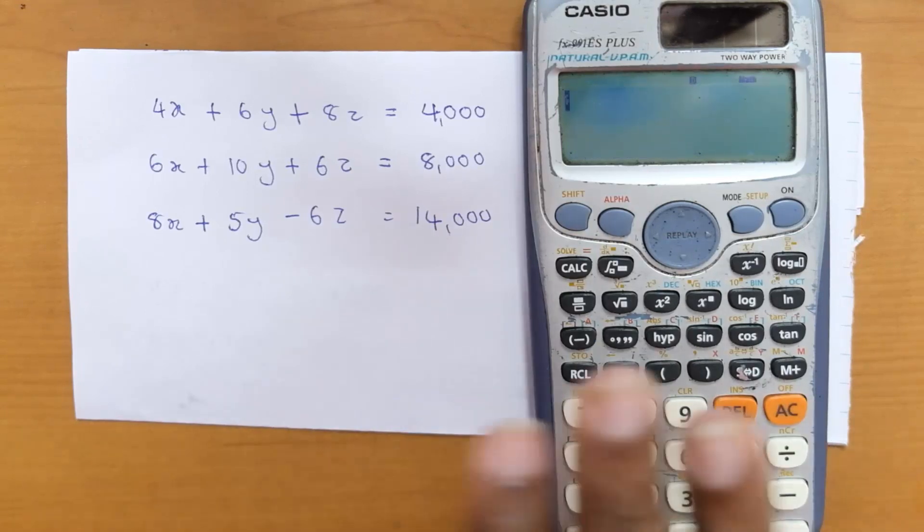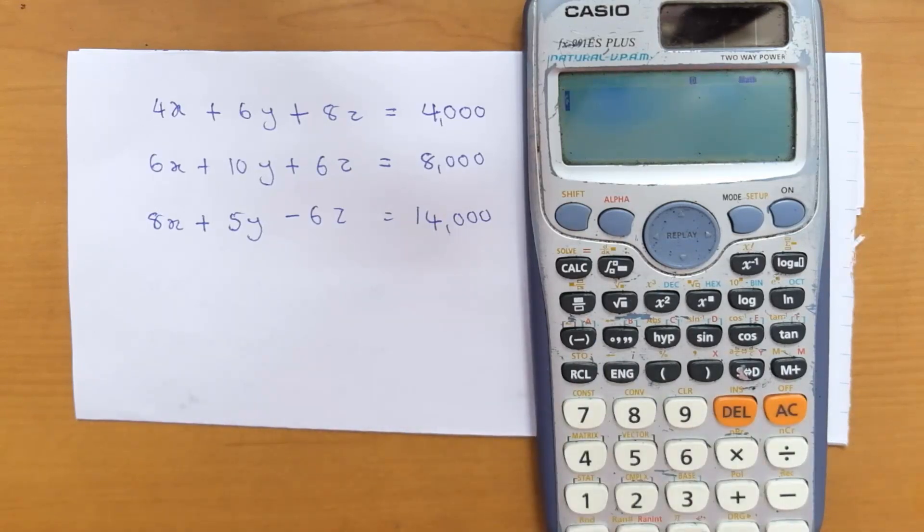Press the Mode button, then go to EQN (equation), which is number 5. Since this particular question has three variables, select the second option.